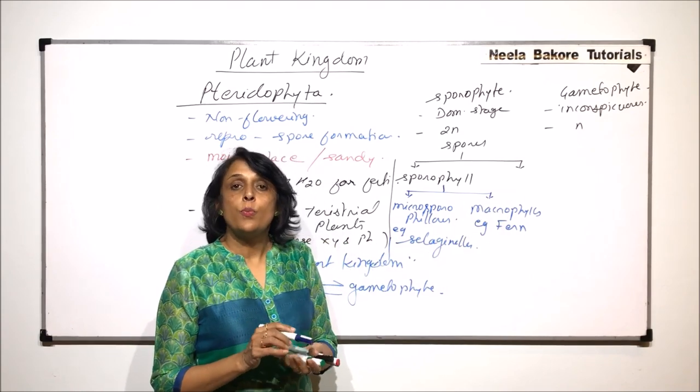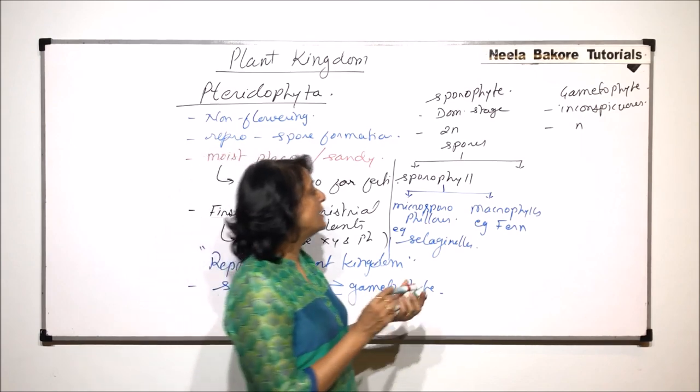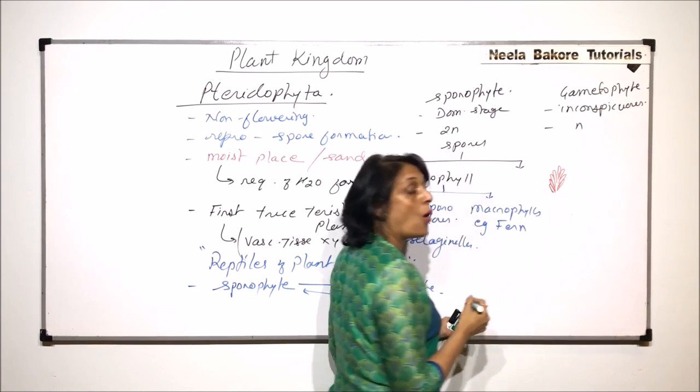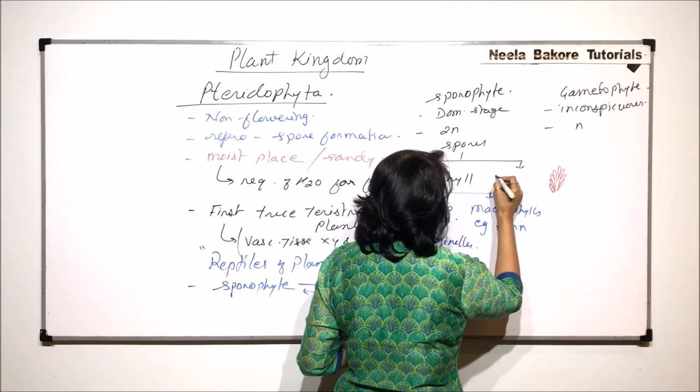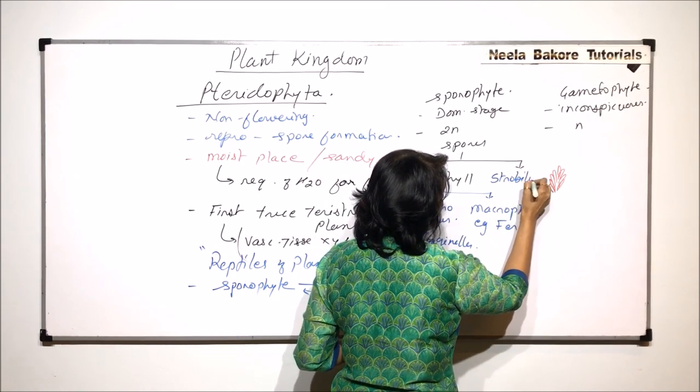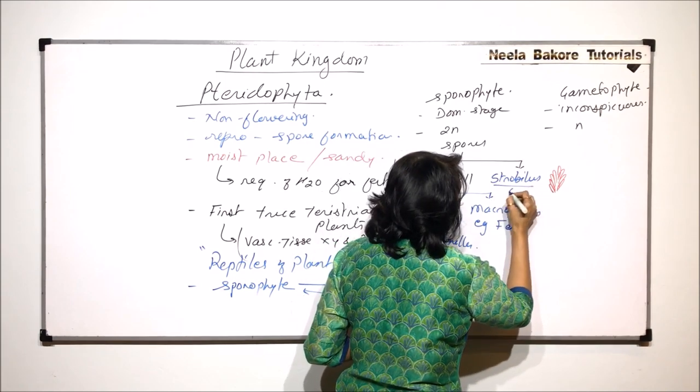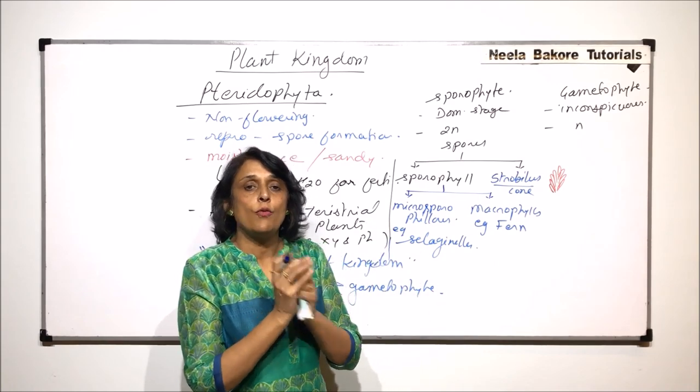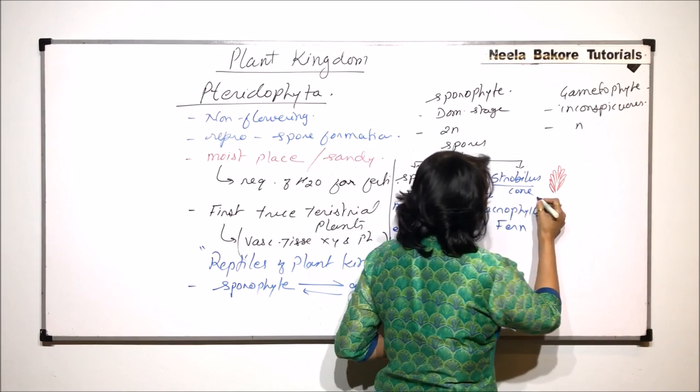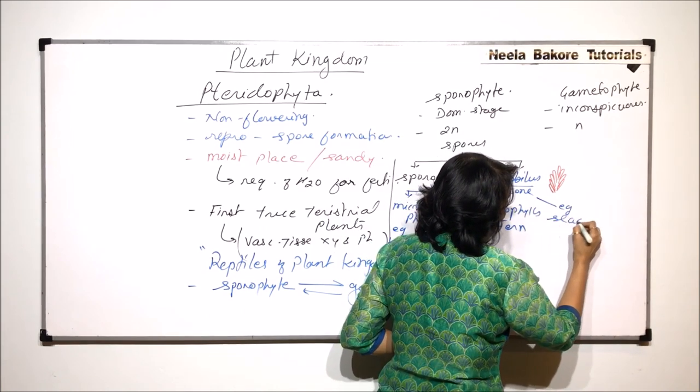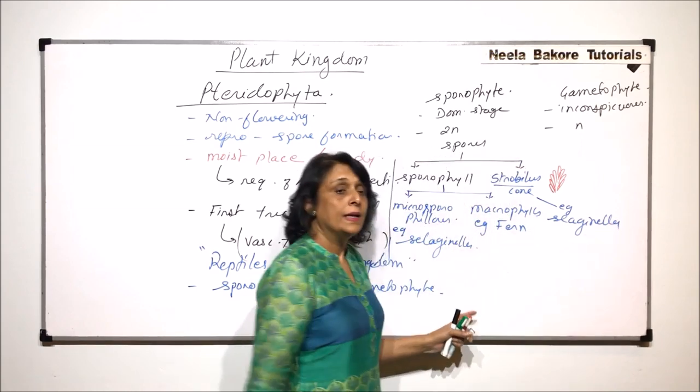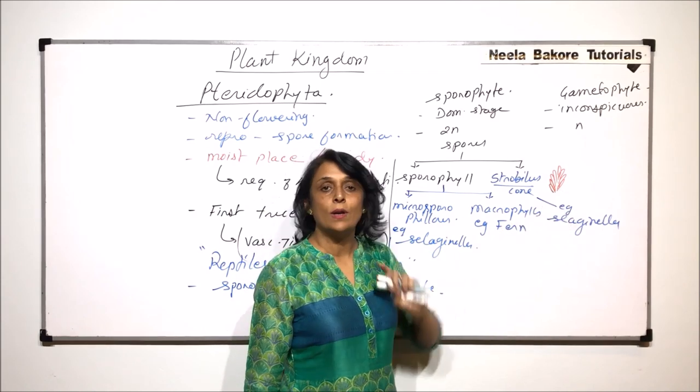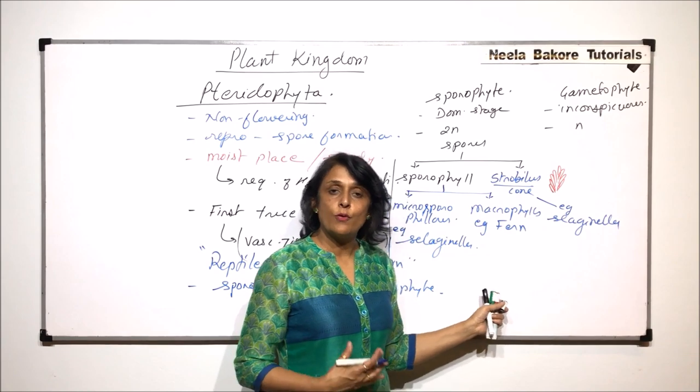In some cases, the spore producing leaves get compactly arranged to form a structure which is known as a strobilus or a cone. So the structure where the spores can be produced is a strobilus, or they are called strobili, or we also call it a cone, where the leaves which are going to produce the spores get compactly arranged to form this structure, which is the cone. Here also the example is Selaginella. In Selaginella the leaves are tiny. It is a microphyllous plant, but the leaves are compactly arranged to form a cone-like structure. So this is how the sporophyte is going to be.